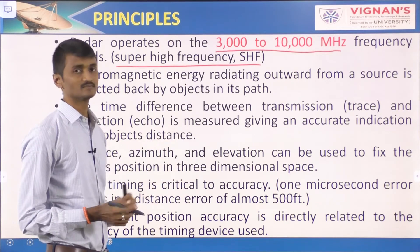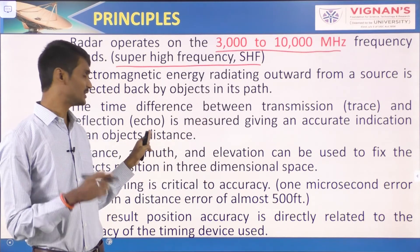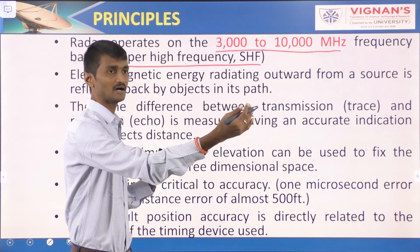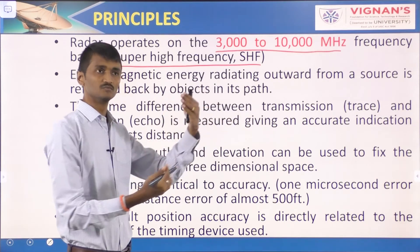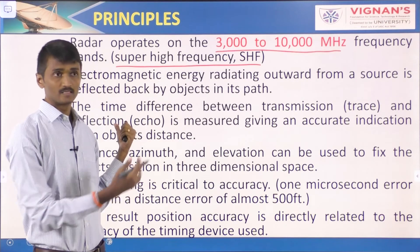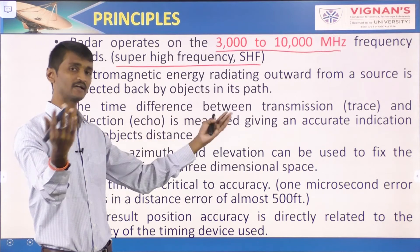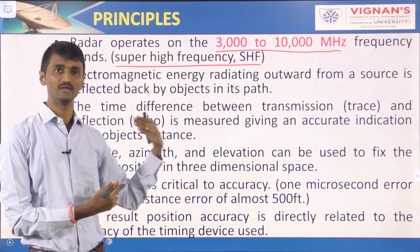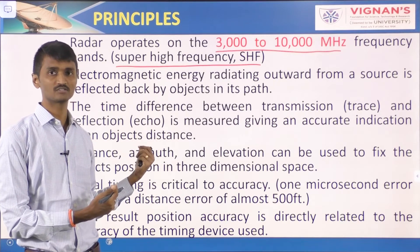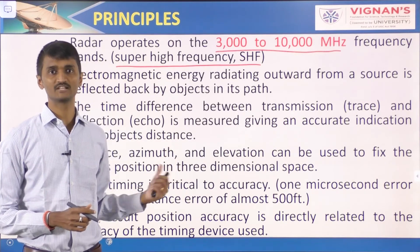The time difference between transmission and reflection is measured, giving an accurate indication of an object's distance. Note that if any target is present in the transmission path, some of the transmitted power will be intercepted by the target and reradiated back in many directions. That reflected wave energy received back at the radar is called the echo signal. The reflected wave is also called an echo.